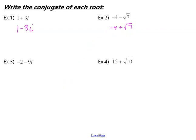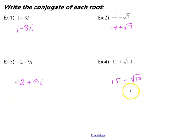Now I want you to take that idea and try examples 3 and 4 on your own. Pause, try to come up with the conjugate of each root, and then come back and see if you got the right answer. Hopefully you got negative 2 plus 9i for number 3 and 15 minus square root of 10 for number 4.